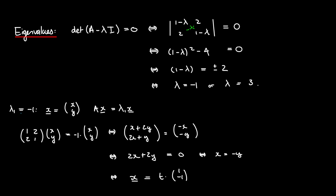That gives us the eigenvectors corresponding to lambda₁ equal to negative 1. We can choose any one of these eigenvectors to be our x1. Let's take t equal to 1, so we choose x1 to be (1, -1).